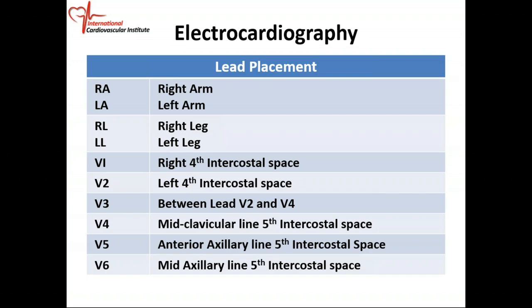We're going to put these electrodes at different positions, and you have to know the correct position. We put electrodes on the right arm — either the forearm or the shoulder area — and on the left arm similarly. Then the right leg, which can go on the leg itself or in the right groin or lower abdominal area. And then the left leg, similarly on the leg or the left groin. These are what we call limb leads.